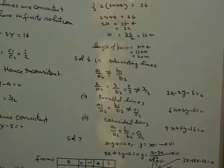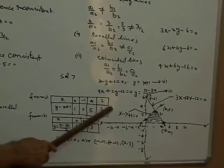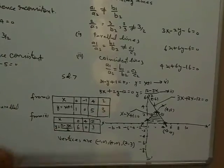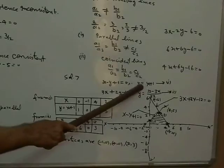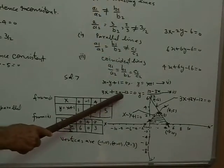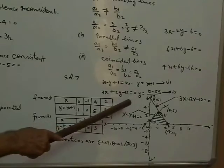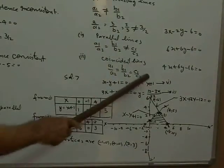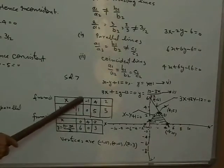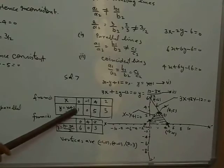For question number 7, draw a graph. The first equation is x minus y plus 1 equal to 0, which gives y equal to x plus 1. The second equation is 3x plus 2y minus 12 equal to 0, giving 2y equal to 12 minus 3x, so y equal to (12 minus 3x) divided by 2. From the first equation, if x equals 0 then y equals 1.